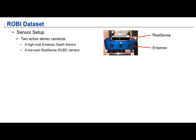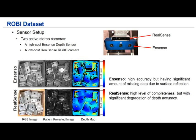We capture the Robi dataset with two active stereo cameras: a high-cost Ensenso depth sensor and a low-cost RealSense RGBD camera. We show sample data captured with these two cameras. We can clearly see that the Ensenso camera is able to capture objects with a lot of geometric detail, but there is a large amount of missing data due to surface reflection. In comparison, the depth map captured with RealSense has a higher level of completeness, but its depth quality is much worse.